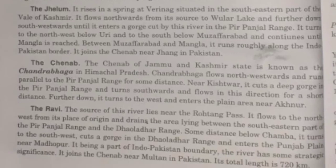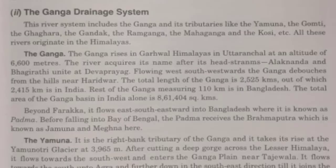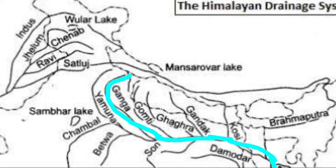There are many tributaries of River Indus. The five main tributaries are Jhelum, Chenab, Ravi, Beas, and Sutlej. The next drainage system is River Ganga.